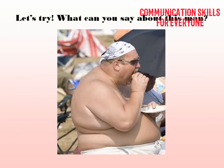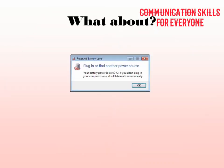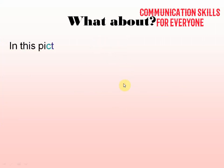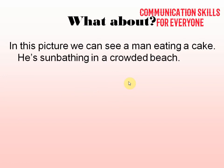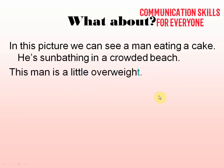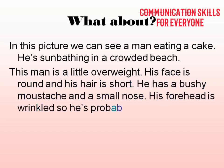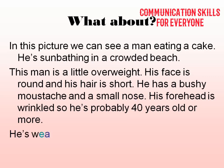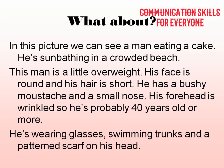Now look at an image and try to describe the person. In this picture, we can see a man eating a cake and sunbathing on a crowded beach. This man is a little overweight, his face is round, he is short, he has a bushy mustache and a small nose, and his forehead is wrinkled — so he's probably 40 years old or more. He is wearing glasses, swimming trunks, and a patterned scarf on his head.